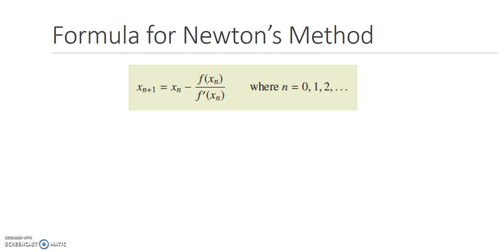Here's the formula for Newton's method. There are a number of things we need to do. First, we need to define the original function f of x. Secondly, we have to find the derivative of that function. Thirdly, we divide f of x by its derivative. Finally, we subtract that answer from the relevant x value we're using. We use this formula over and over again at each stage to narrow in on our final solution.